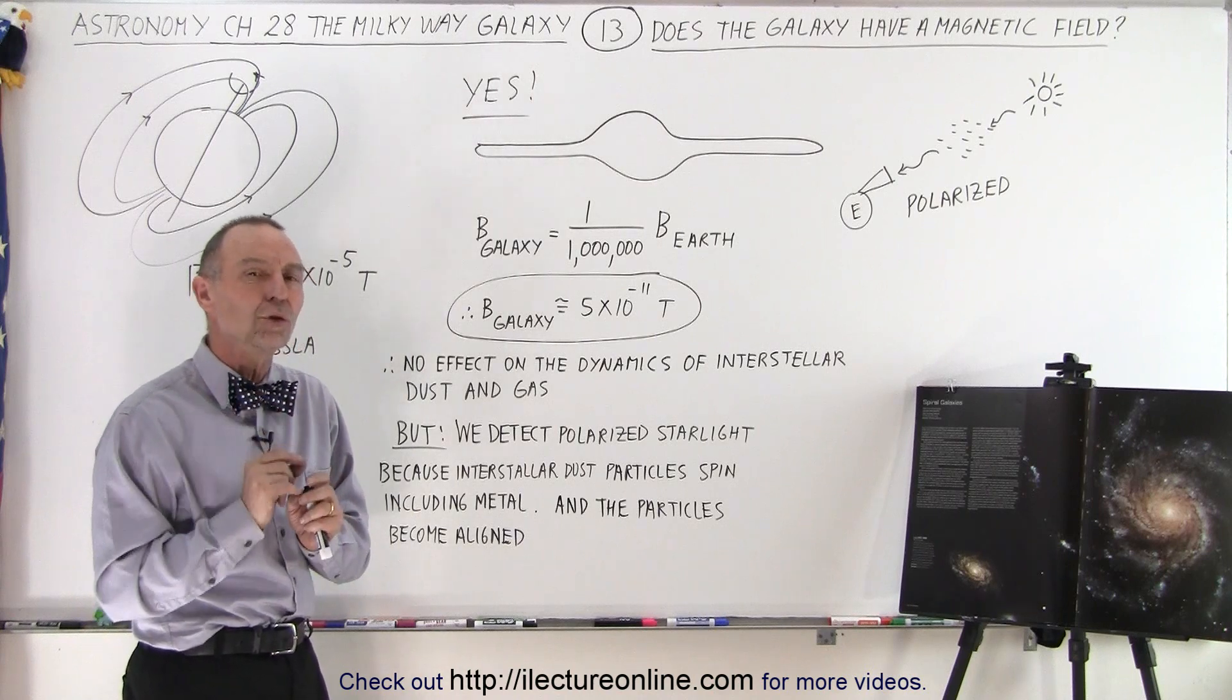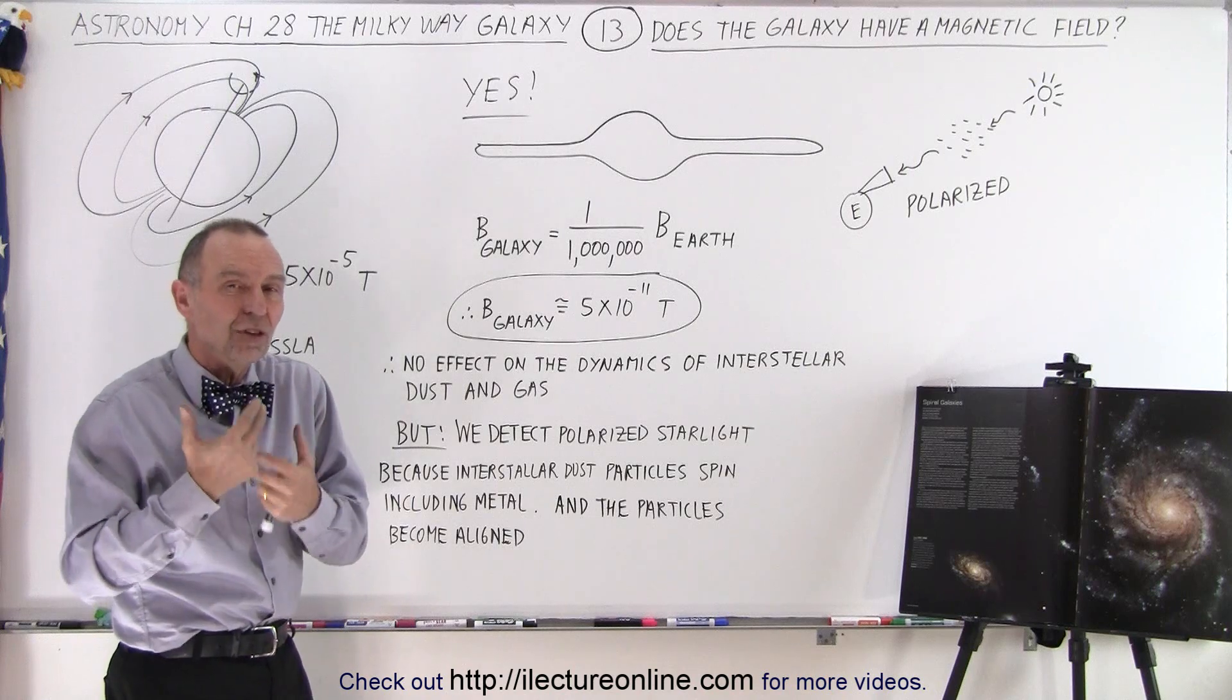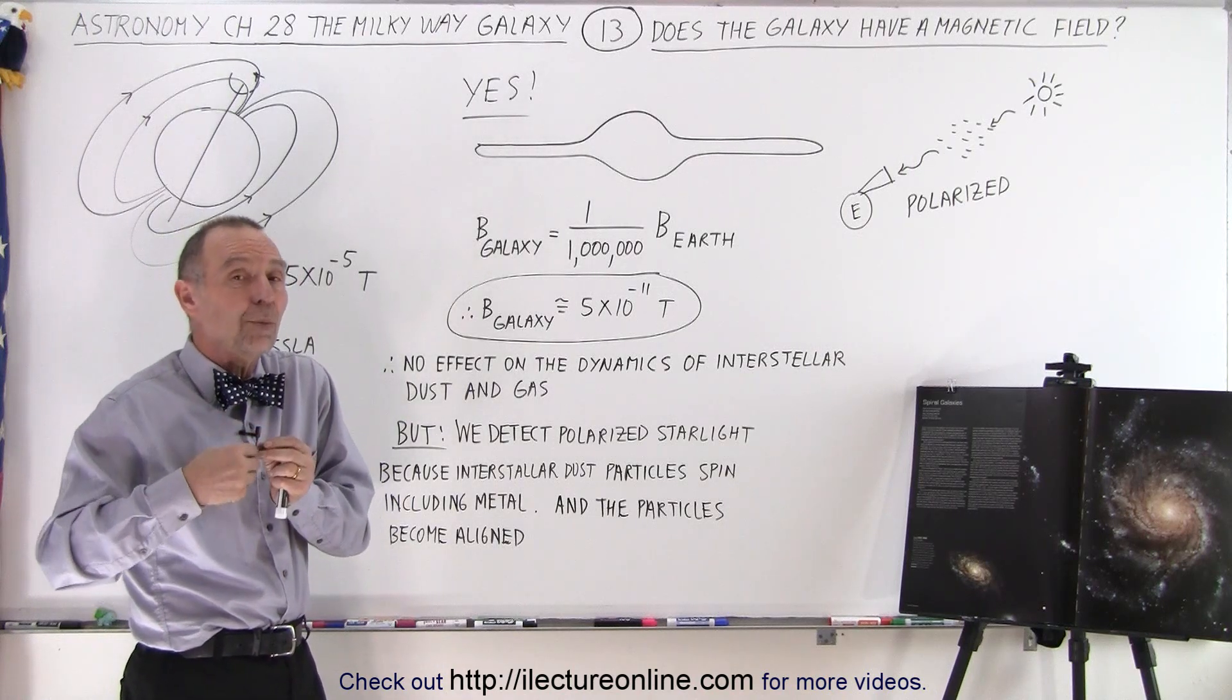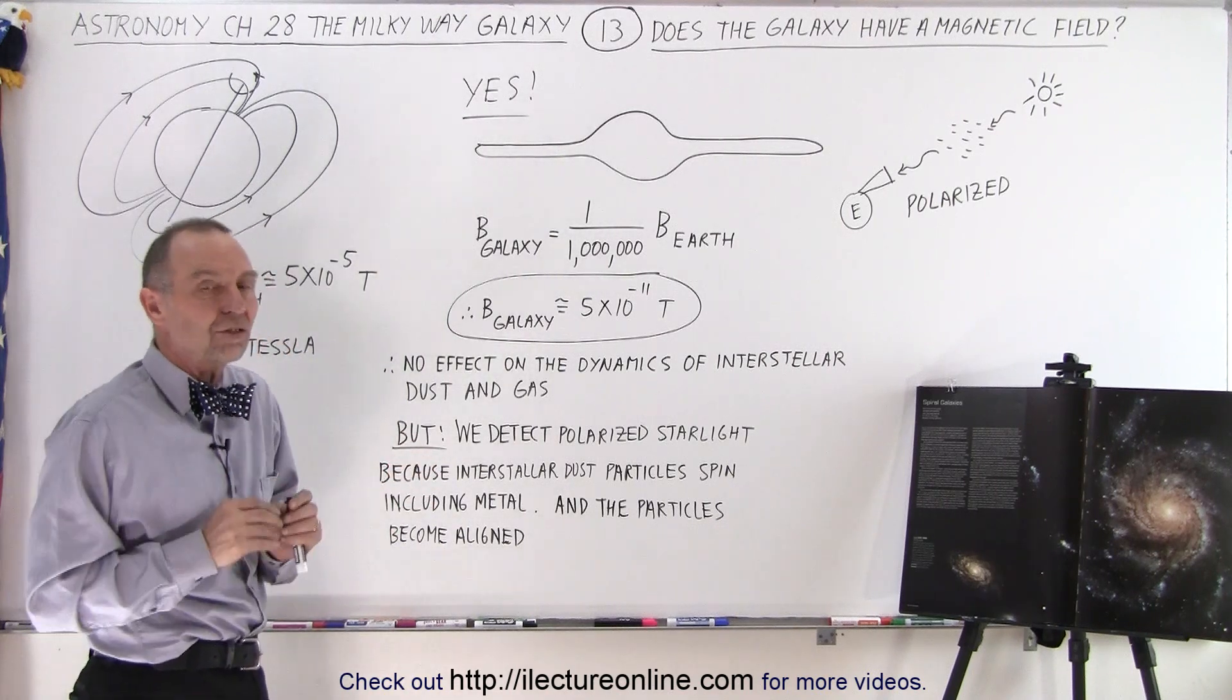But what it could do for the very small particles, it could actually align them. Because if there's metal inside the dust particles, well, those dust particles then would be affected by the magnetic field, and all of them would then turn into a similar direction.